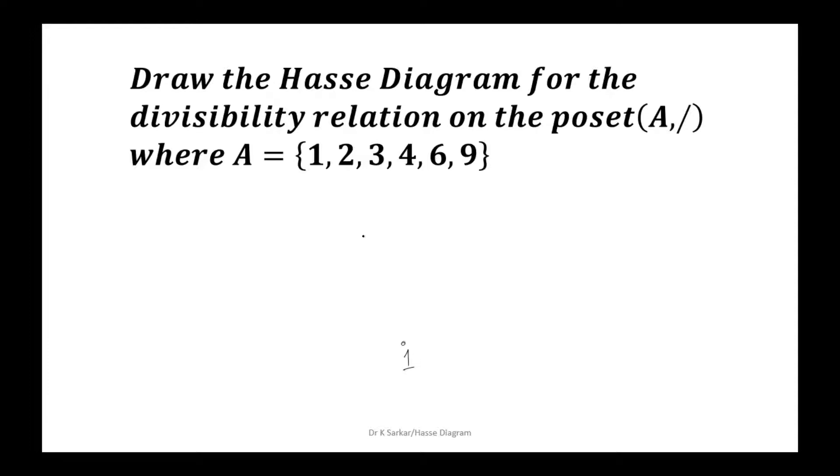Then the elements in the set are two and three, which do not divide each other. Hence they are placed at same level separately but divisible by one. So both are joined by one.